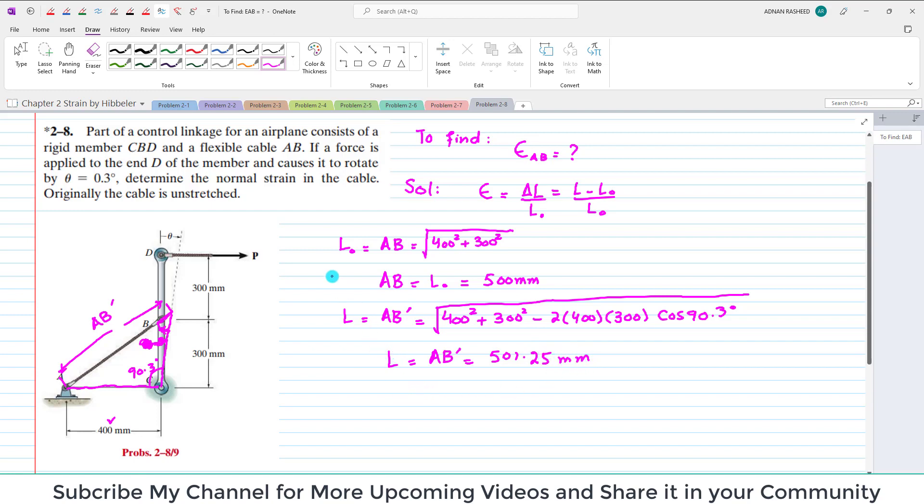Now you have the original length as well as the new length. You can find the strain in this wire AB. So strain in wire AB is equal to final length, which is 501.25, minus original length, which was 500 millimeters, divided by original length 500 millimeters.